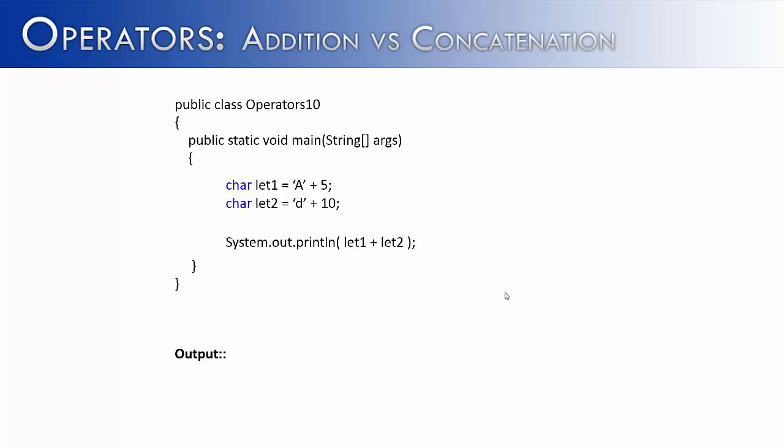So we have a character literal capital A plus 5, and we would get 70. Or we have a lowercase d, which is 100 in ASCII, and if we added 10, we would get 110. Because we're using two primitives here, like character and character, when we say let one plus let two, it's not going to concatenate. It is going to add them together. So if we were to run this program, we would get 180.